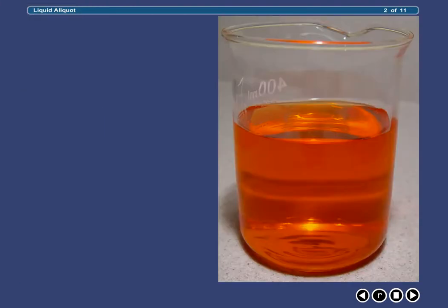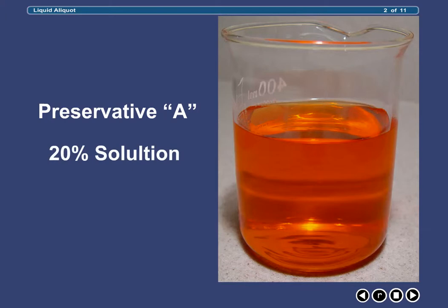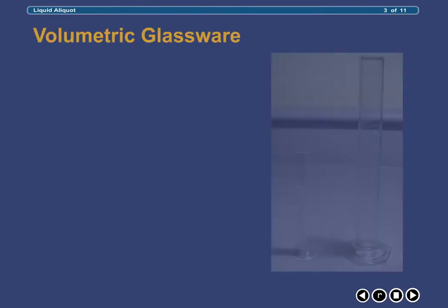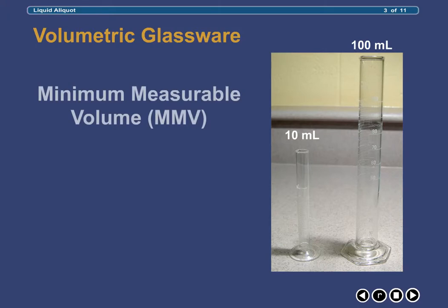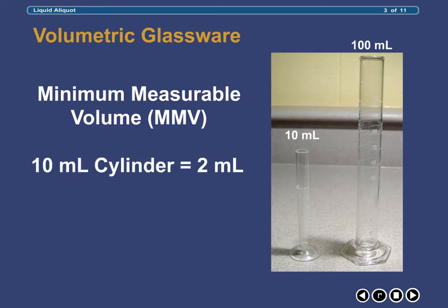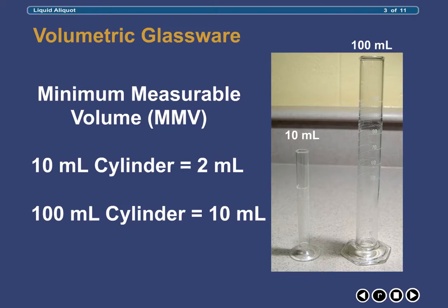In this example, we are using a hypothetical liquid preservative, which we will refer to as Preservative A 20% Solution. This preparation has been colored orange for the purposes of illustration. The volumetric glassware that we have at our disposal includes a 10 milliliter and 100 milliliter graduated cylinder. The minimum measurable volume for each cylinder size, not to exceed 5% error, is listed at 2 milliliters and 10 milliliters respectively.